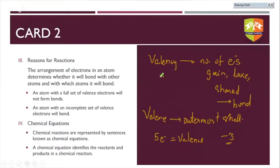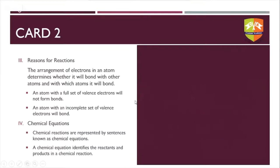The reasons for a chemical reaction are whether an atom will form a new bond and which atoms will break their original bond — these two actions make a chemical reaction proceed. Chemical equations are chemical reactions represented by sentences, using normal English language as well as mathematical symbols like plus and an arrow. A chemical equation basically identifies the reactants and products in a chemical reaction.